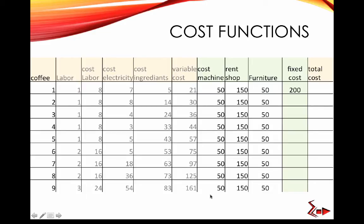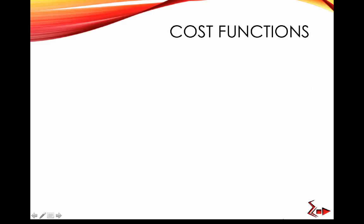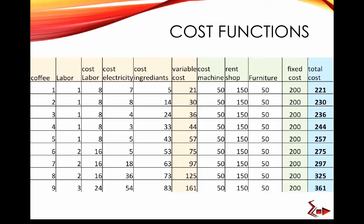Fixed costs don't change with output. The coffee machine costs $50 whether you produce one or nine cups. Rent is the same whether you make one or nine coffees, and so is furniture. That's the meaning of fixed cost — it doesn't change as you produce more or less. Total fixed cost adds up to 50 + 100 + 50 = $200, which stays constant regardless of output. Total cost equals total variable cost plus total fixed cost.